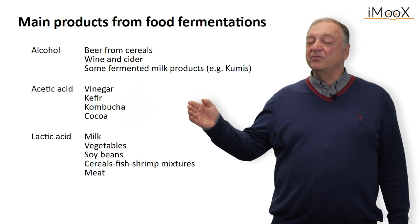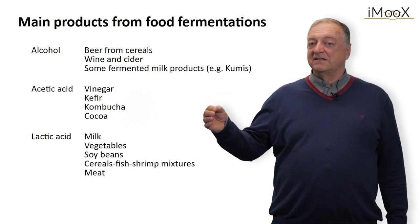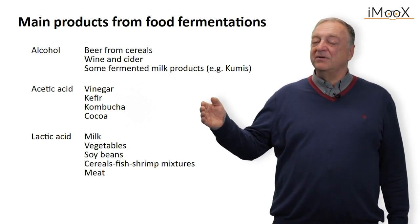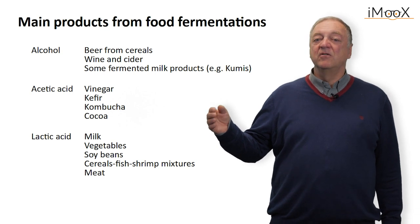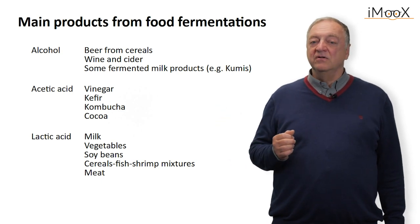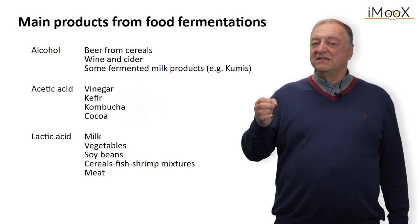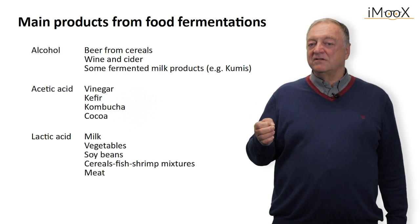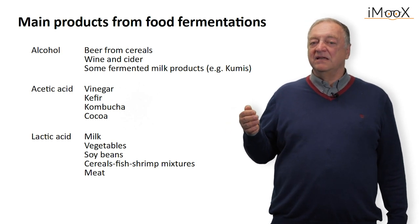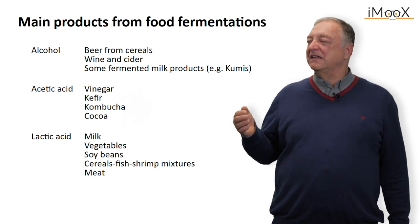The next group is acetic acid production, with the main product being vinegar. In other fermented products where acetic acid bacteria are active, we also have acetic acid production — for example, in kefir, and kombucha is very common with acetic acid. Also, when we look at the production of cocoa, fermentation with acetic acid is very important because it results in the precursors necessary for aroma formation. Sometimes when the acetic acid is not completely removed during chocolate manufacturing, you can even taste the acetic acid in the end product.